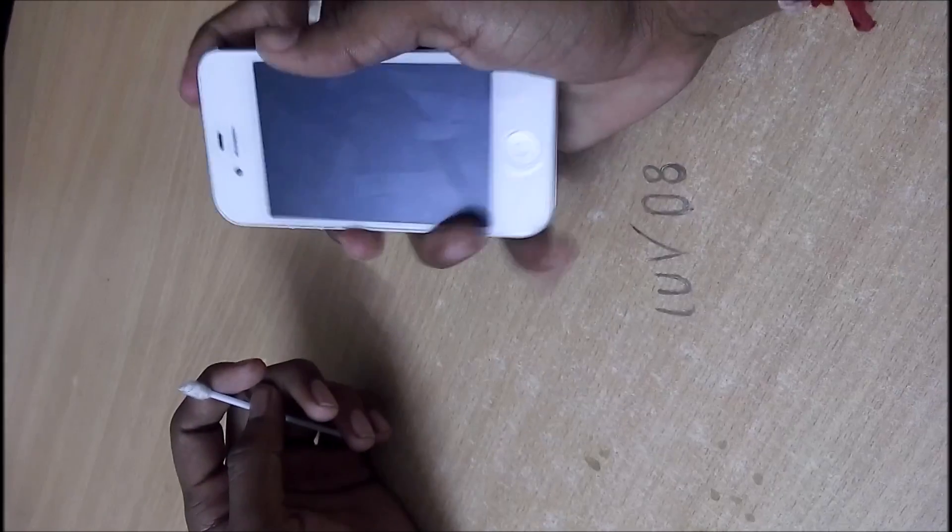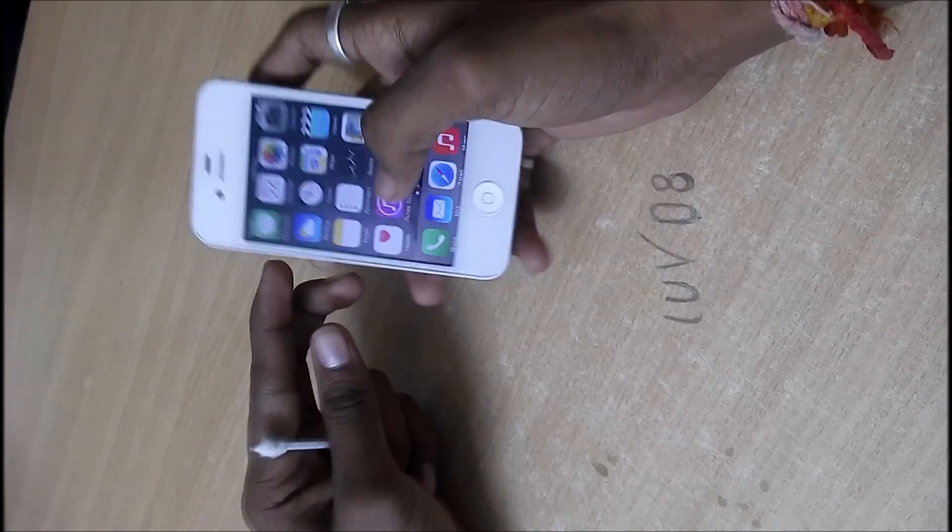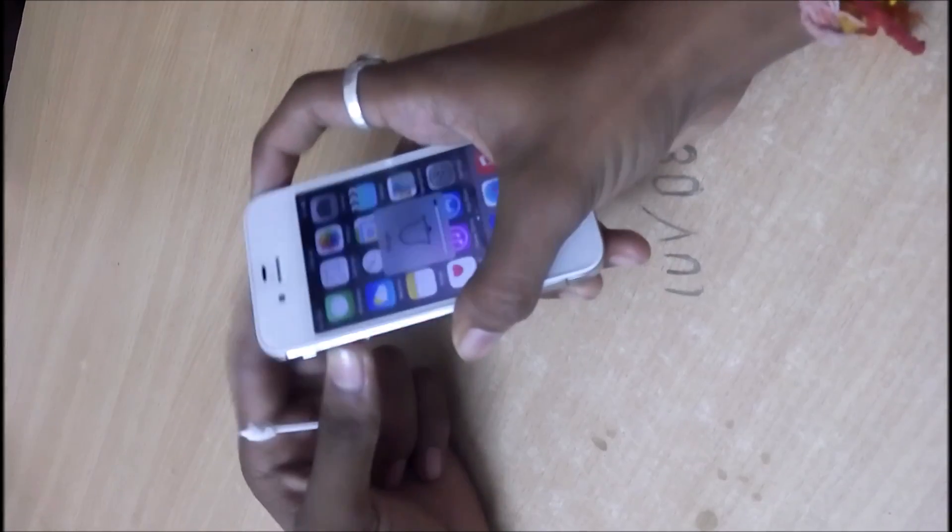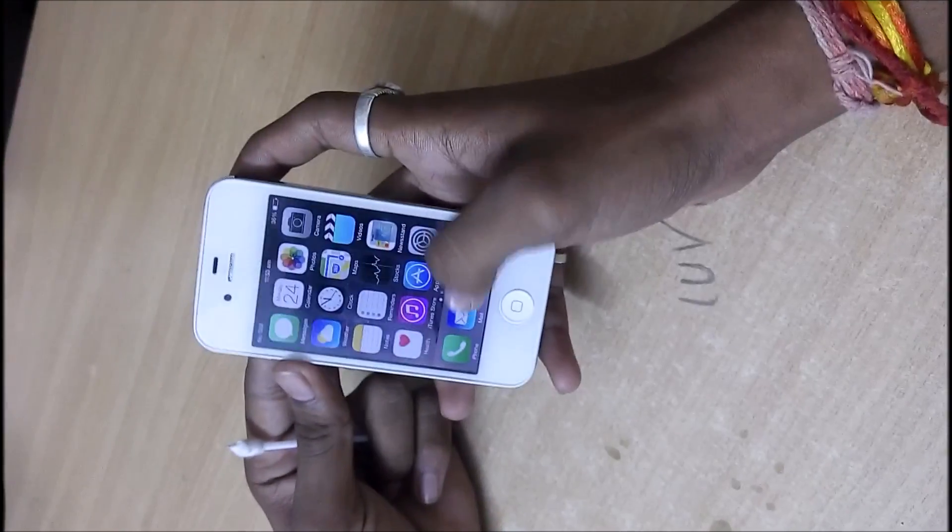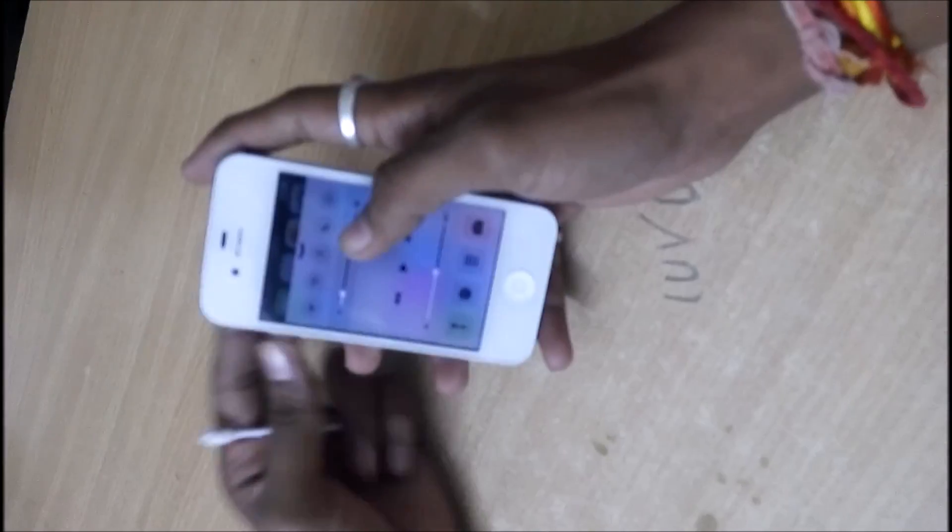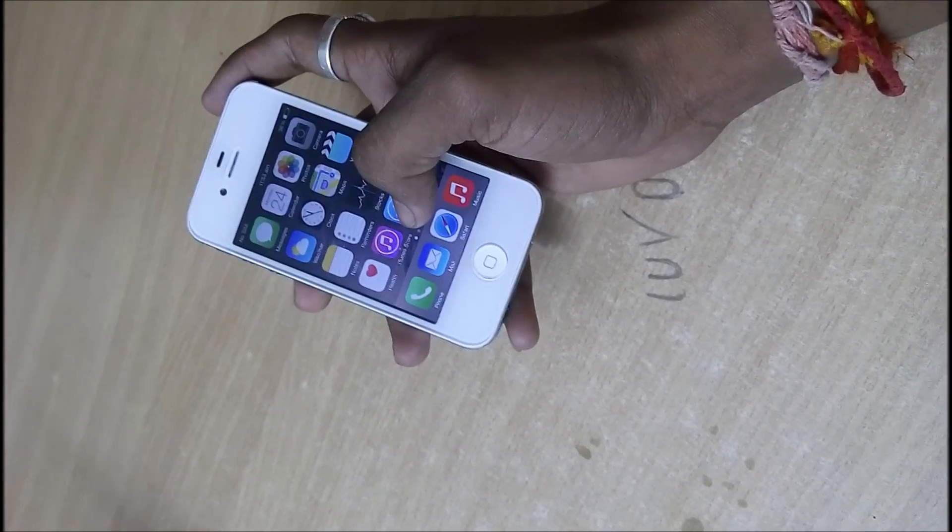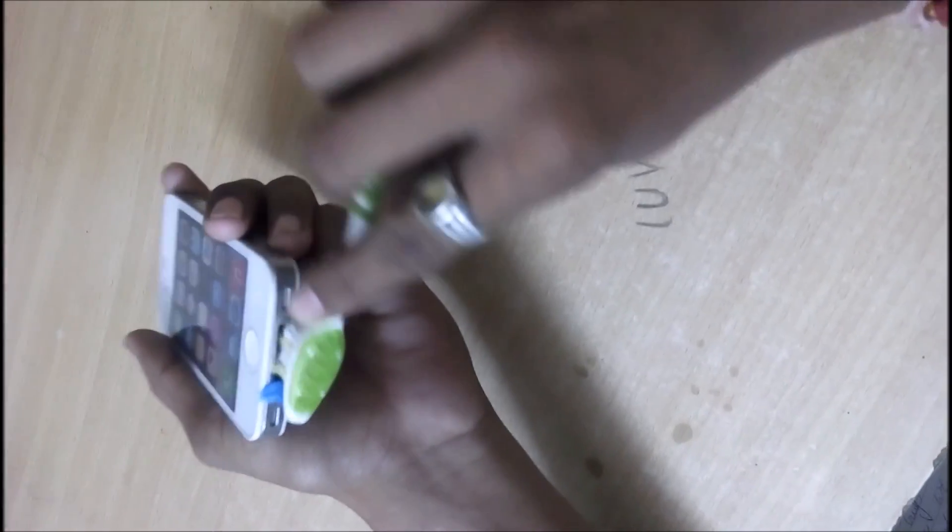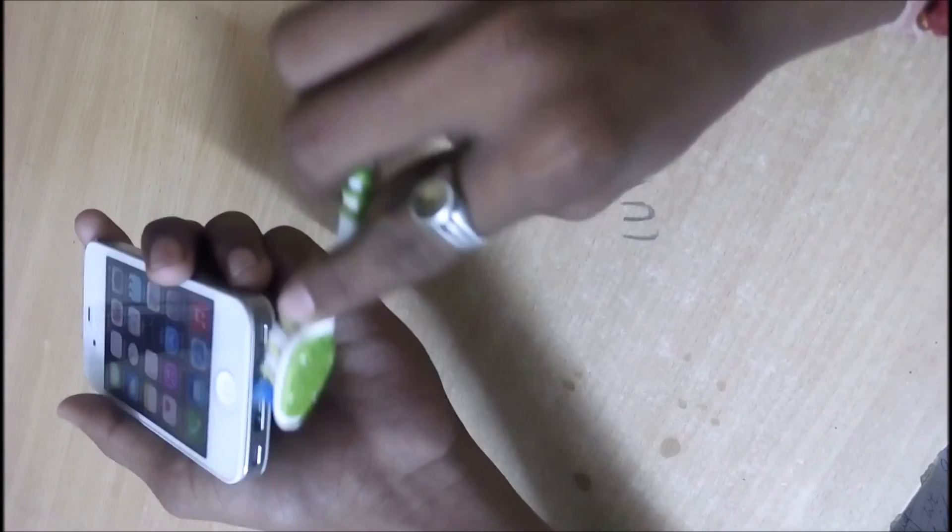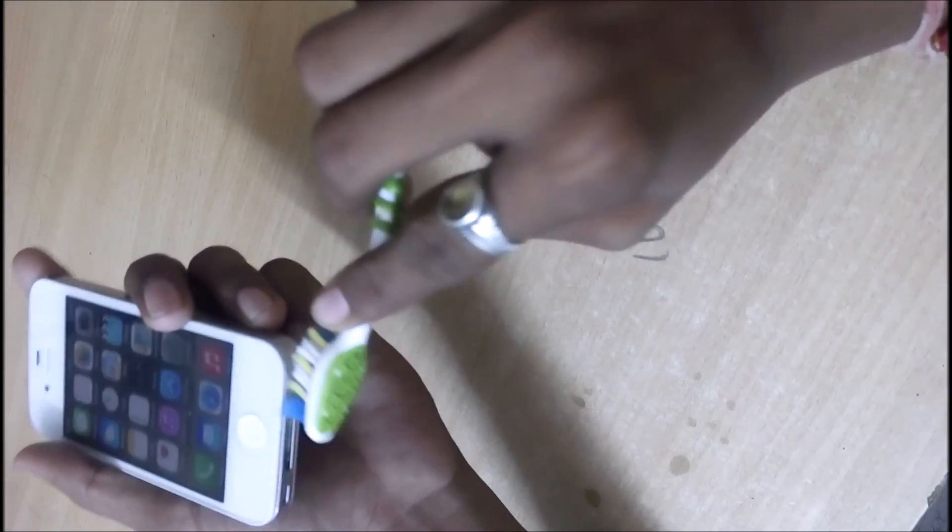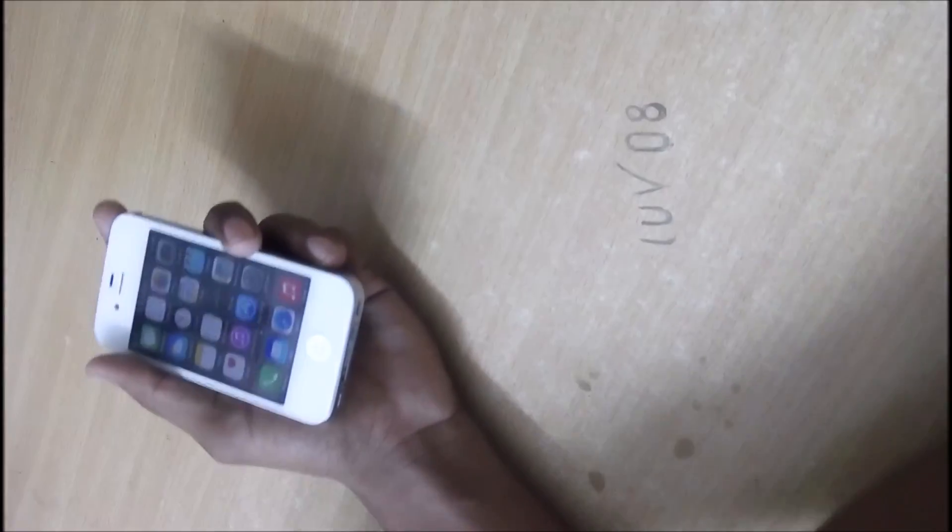Whenever I was increasing the volume, this bar was not appearing. So what you have to do is take a toothbrush and try to rub this part so that the dirt from here should be removed properly.